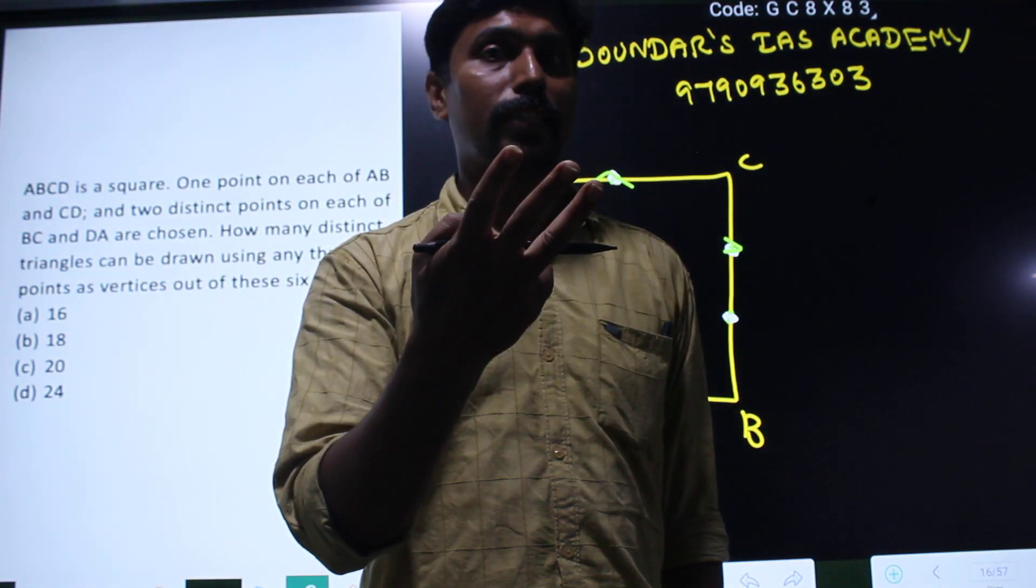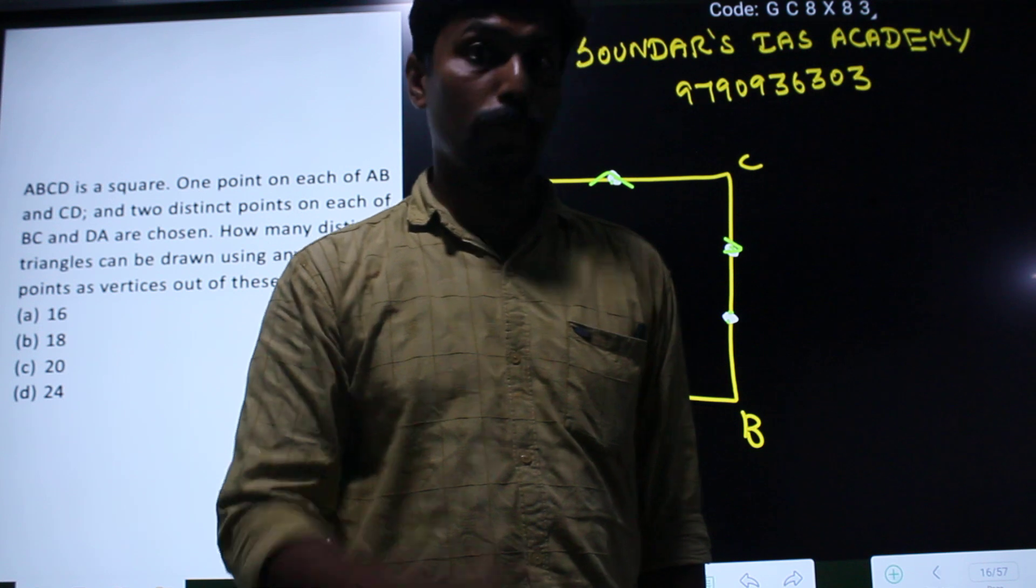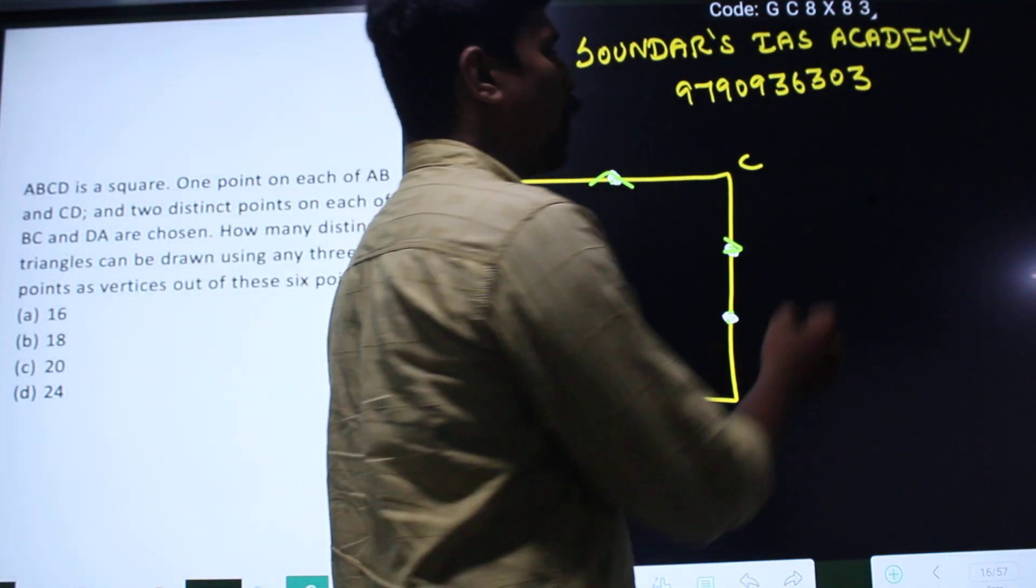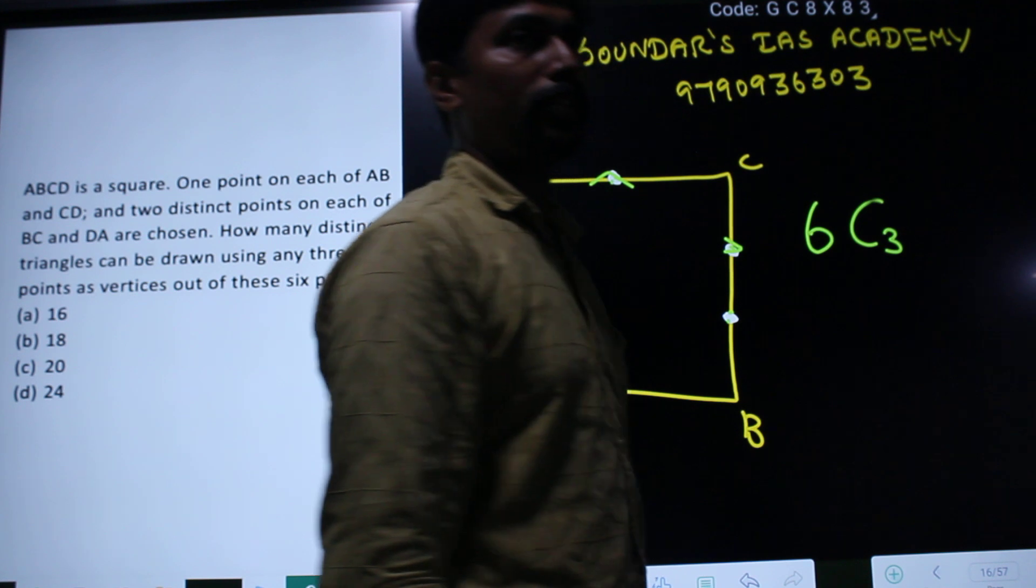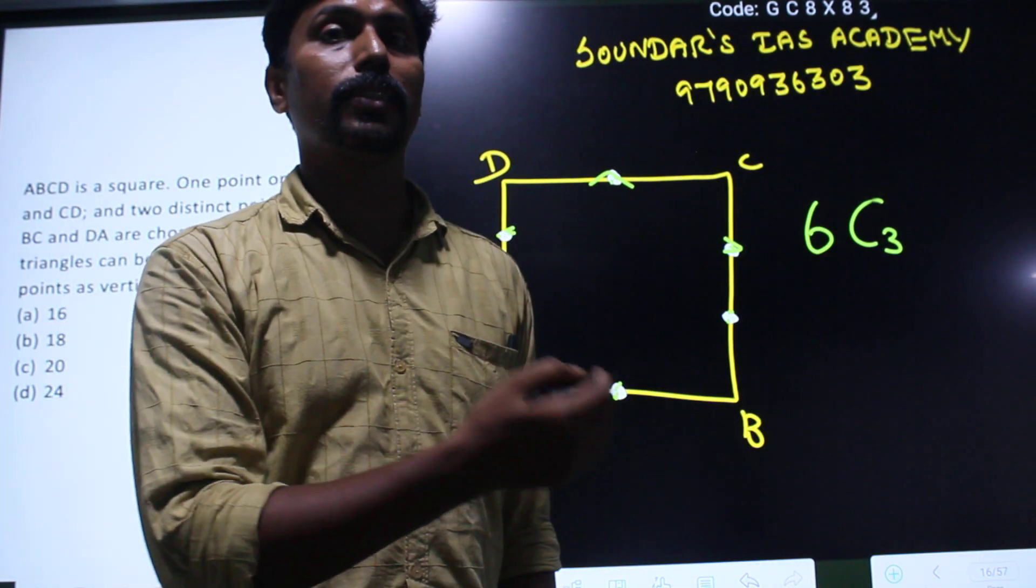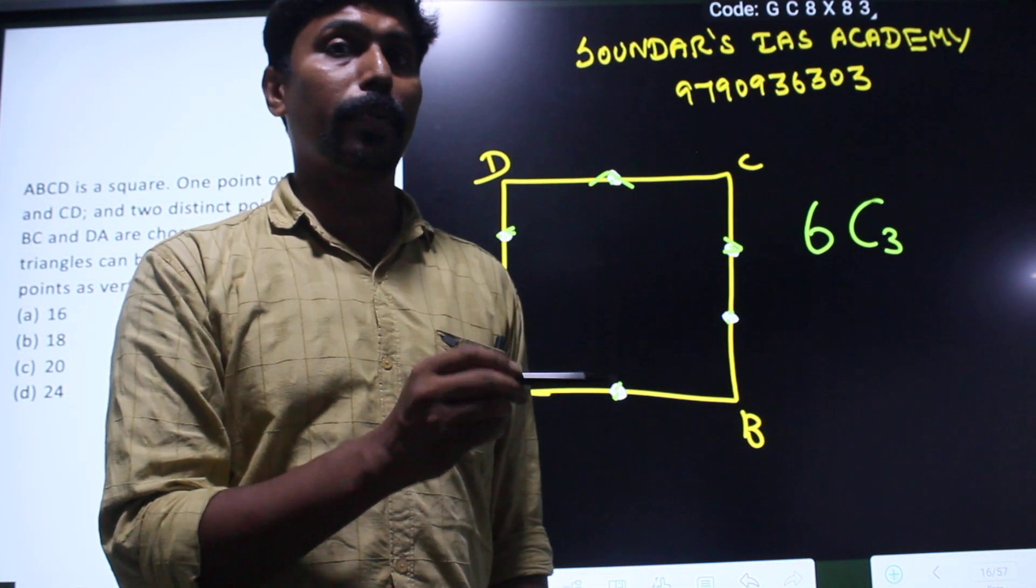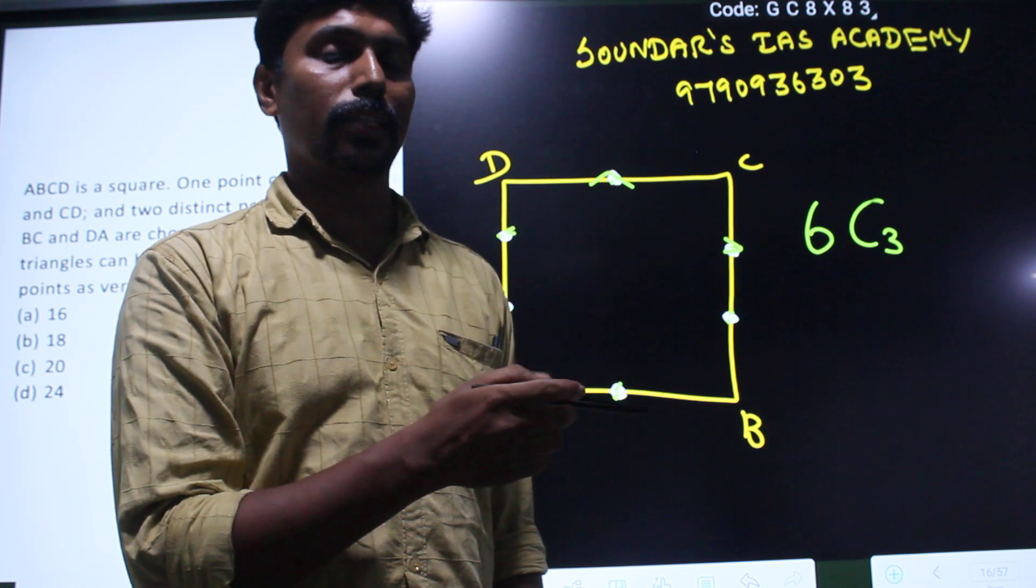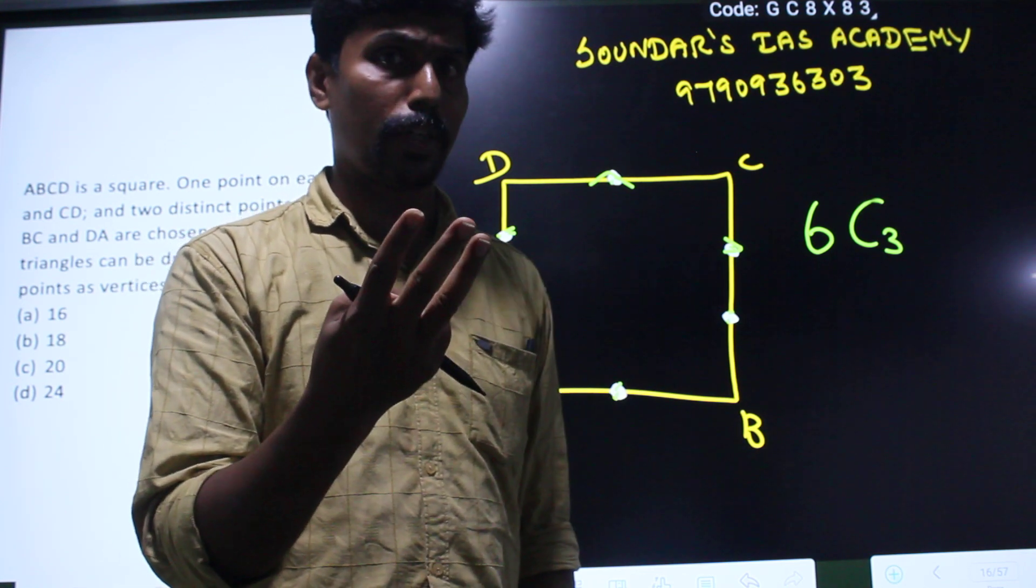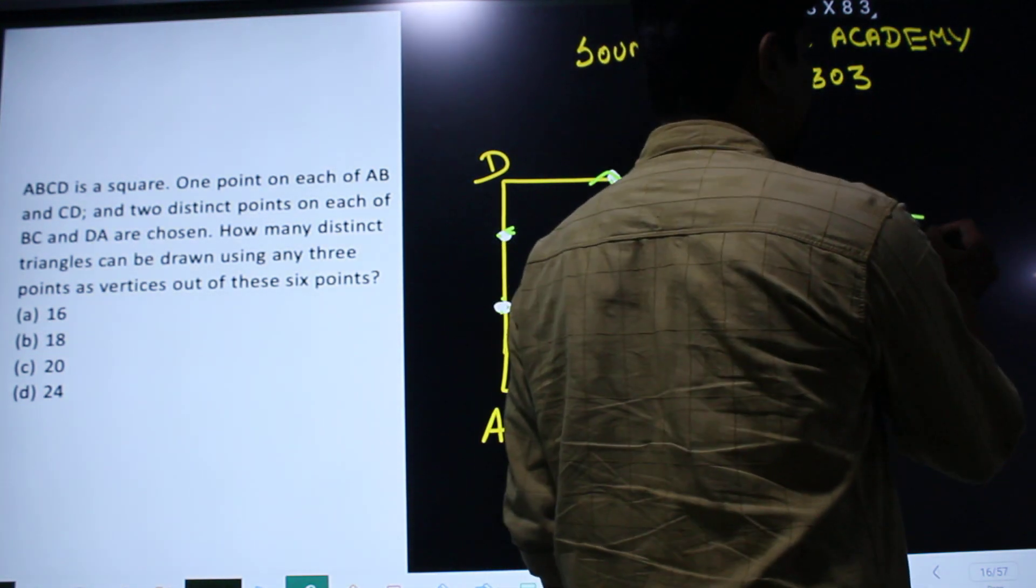In this 6 points, you can select 3 points in this one direction. If you select 3 points, if you select 3 points, you select 6C3. If you select 3 points, there will be a triangle. We select 4 points, this is 6C3.